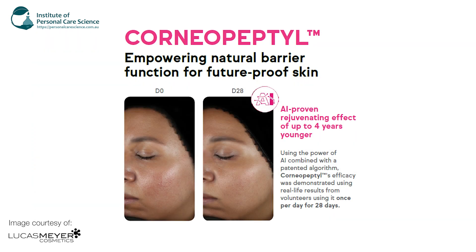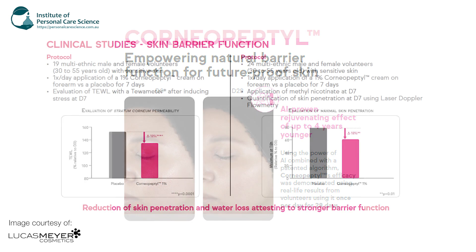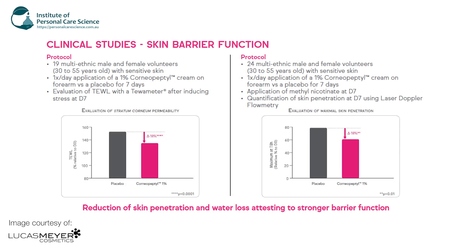And it also makes the skin appear two years younger in 28 days with just one application per day. So you can see there's a before and after photo here. So this is using the active, which has been demonstrated with real life results on volunteers using it once per day for 28 days. So you can also see down here some clinical studies on skin barrier function. So there was 19 multi-ethnic male and female volunteers aged 30 to 55 with sensitive skin. So they applied a cream with 1% of this active once per day for seven days. And you can see here the evaluation was done on the transepidermal water loss. And you can see a massive improvement there.